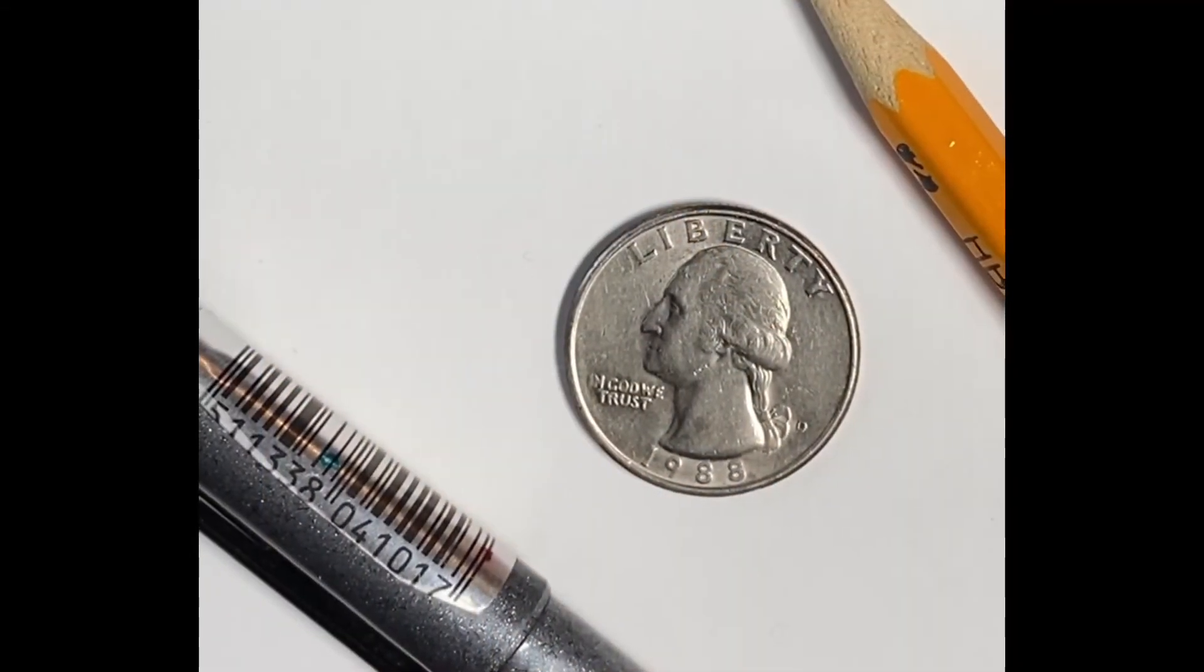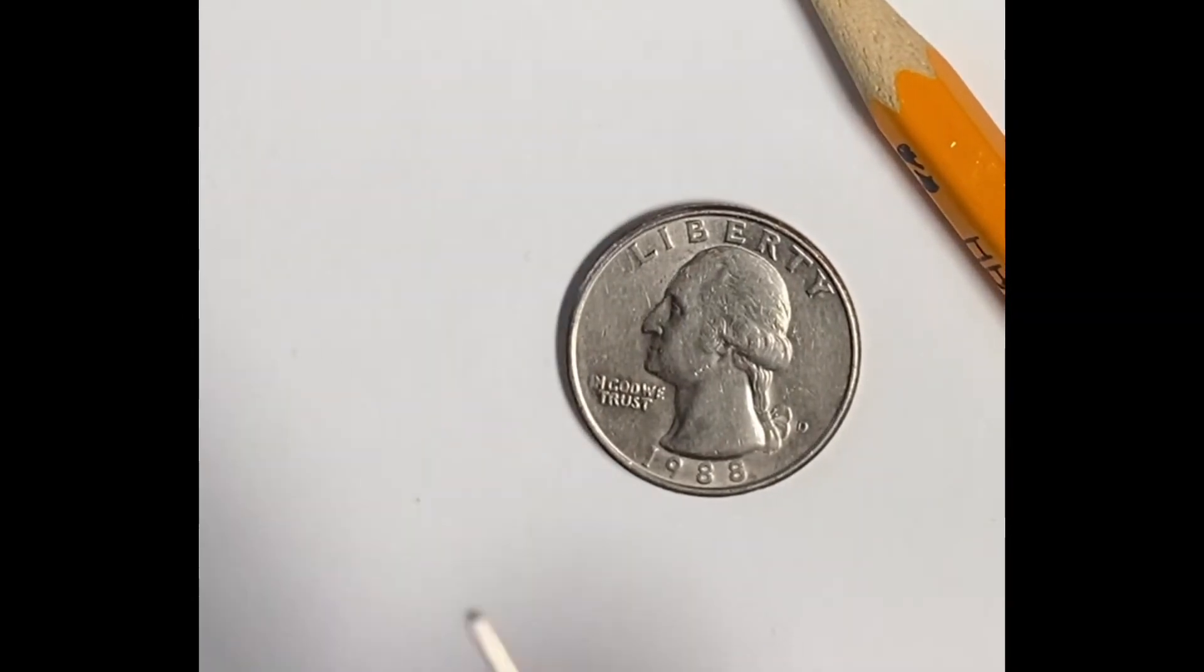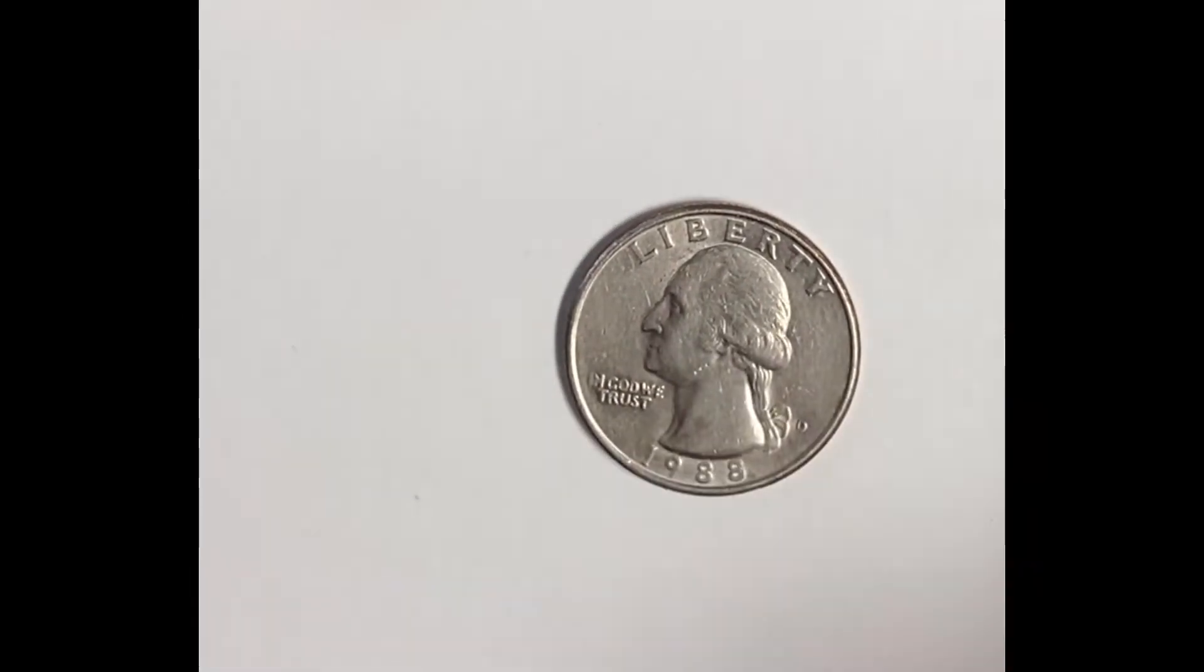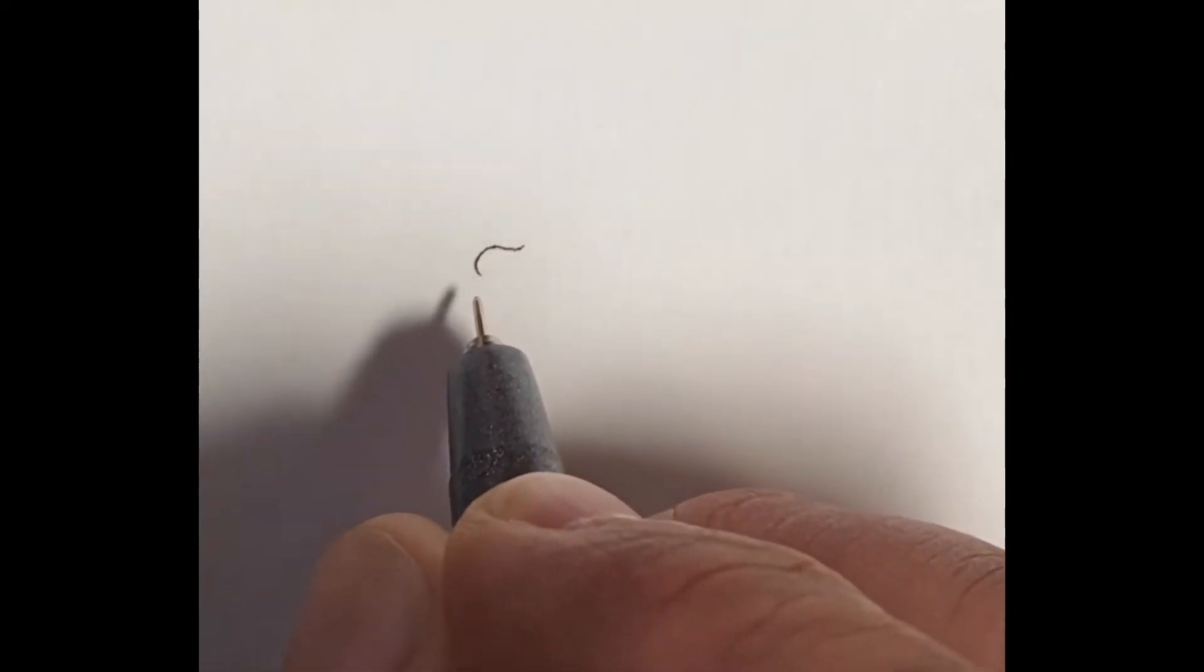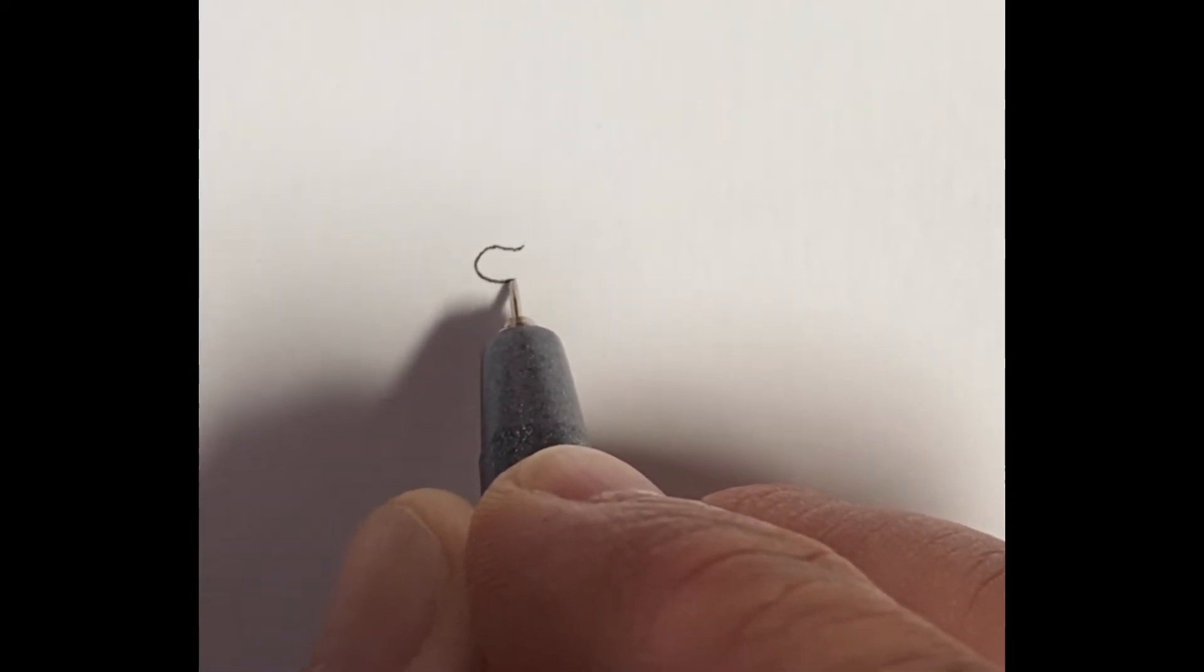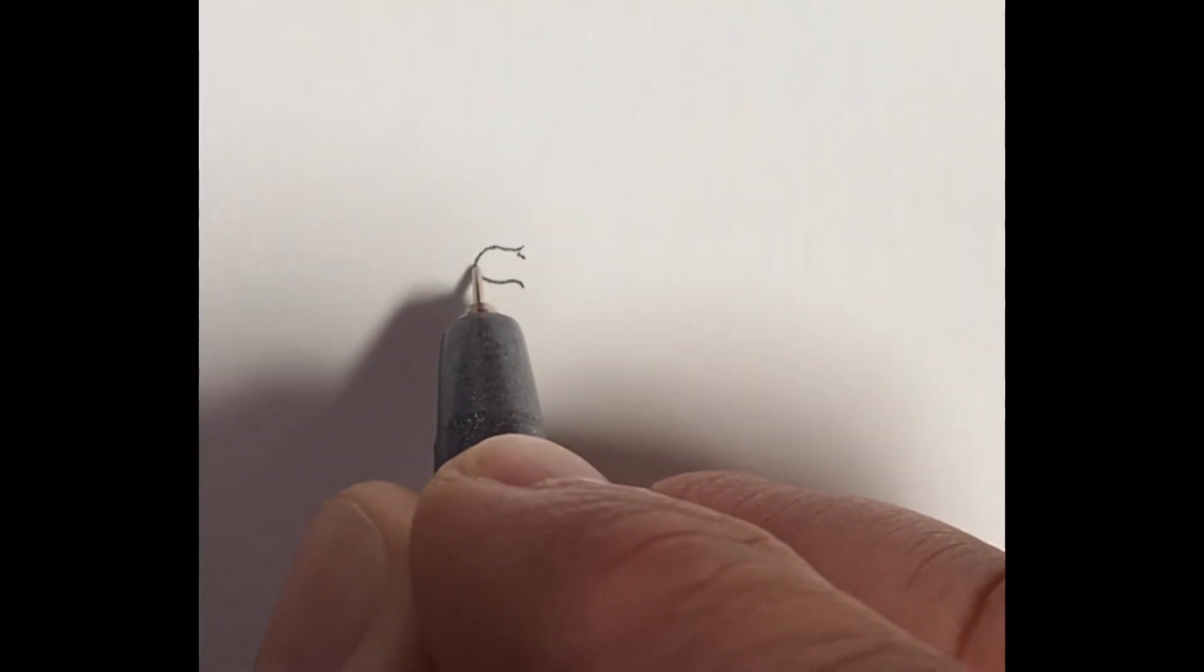So getting started here, I'll take the Copic multiliner 0.03 and I'll get started on the top forehead area of Snoopy's head. I'm just kind of lightly drawing that in, there's the top of his nose and just rounding that down and around. I do use a reference picture while I'm drawing these so I'm looking at that off to the side. I don't use a microscope or magnifying lens.